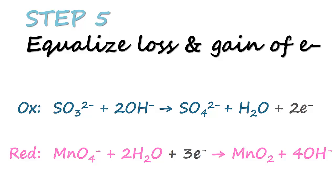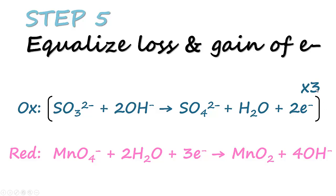The next step is to equalize the loss and gain of electrons. The oxidation equation has two electrons and the reduction equation has three electrons. The common denominator of 2 and 3 is 6, so we multiply the oxidation equation by 3 and multiply the reduction equation by 2.